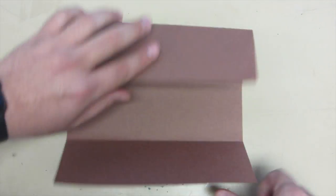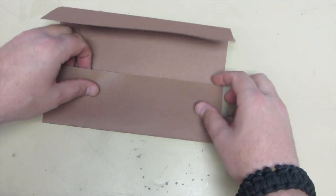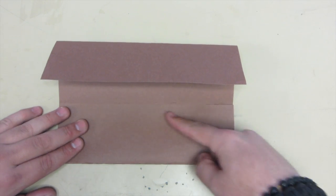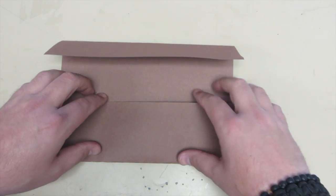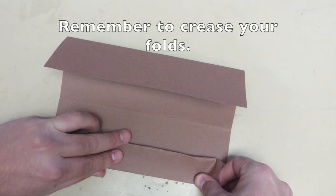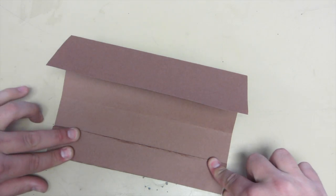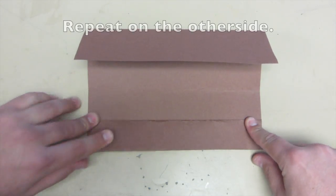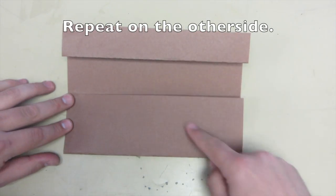Next fold the edges of the paper, which are in the middle, to the new outer edge. Remember to crease your folds, and repeat on the other side.